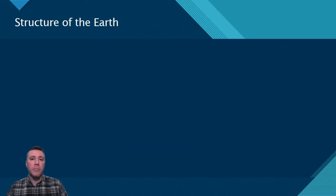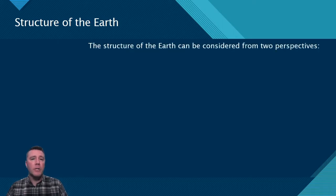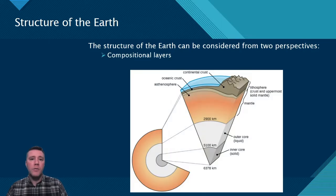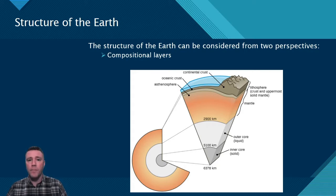The Earth's structure can be considered from a few perspectives. We're going to look at two of them in particular, starting with Earth's compositional layers. The outermost layer is the lithosphere, which includes the solid outer crust — some of which is continental and some is oceanic — as well as the solid top layer of the mantle. Below the solid top portion of the mantle is a region called the asthenosphere, which is not quite solid but doesn't flow like a typical fluid because of its extremely high viscosity, and therefore flows at a velocity of only a few centimeters per year.